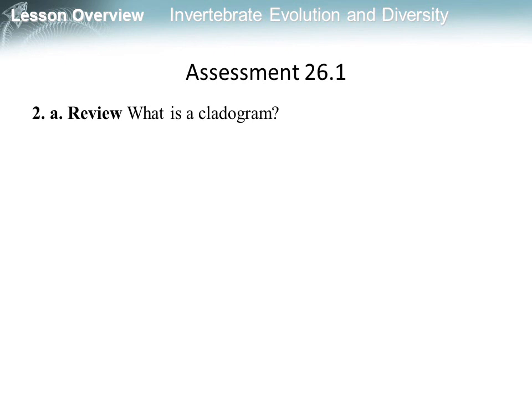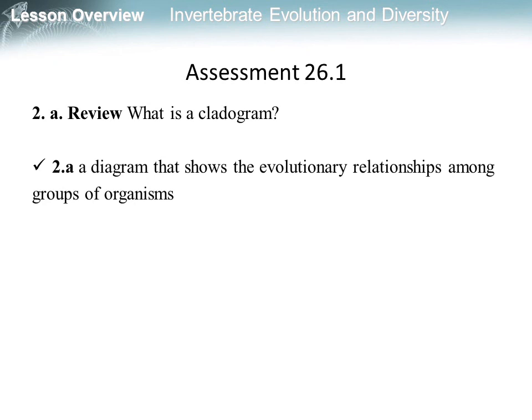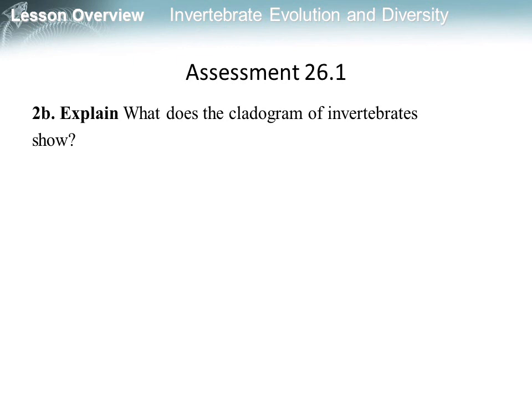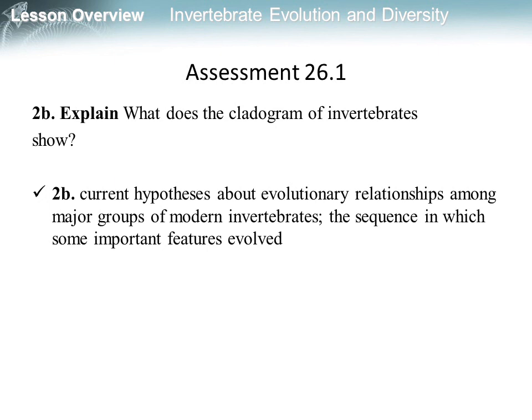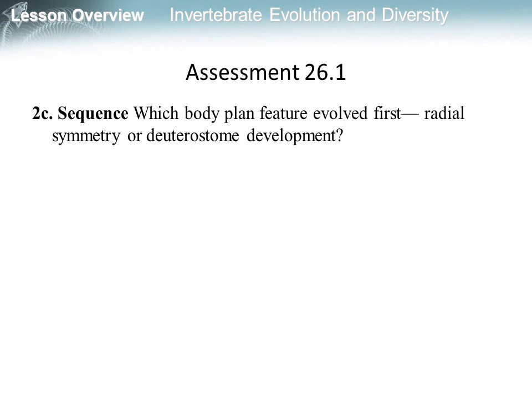Question 2a: What is a cladogram? Answer: a diagram that shows the evolutionary relationships among groups of organisms. Question 2b: What does the cladogram of invertebrates show? Answer: current hypotheses about evolutionary relationships among major groups of modern invertebrates and the sequence in which some important features evolved. To see which body plan feature evolved first — radial symmetry or deuterostome development — the answer is radial symmetry.